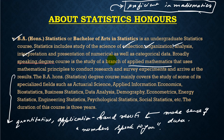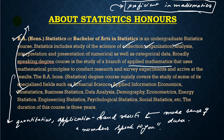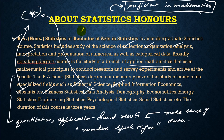A BA Honours in statistics degree mainly covers specialized fields such as actuarial science, which involves risk management; biostatistics, which is a very demanding line and includes the mathematical modeling of disease spreading; and business statistics, which deals with finance. Data analytics is also a very demanding field and includes programming languages such as R, Python, and so on.